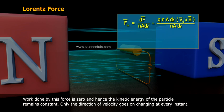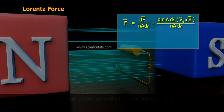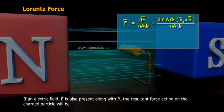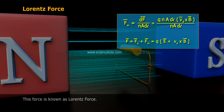If an electric field E is also present along with B, the resultant force acting on the charged particle will be F equals F_e plus F_m equals q times E plus v_d cross B. This force is known as Lorentz force.